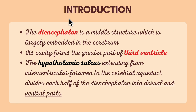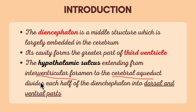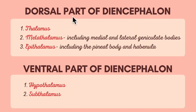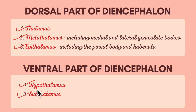Concising the important points under the introduction to the diencephalon: the diencephalon is a middle structure which is largely embedded in the cerebrum. Its cavity forms the greater part of the third ventricle. The hypothalamic sulcus extending from the interventricular foramen to the cerebral aqueduct divides each half of the diencephalon into dorsal and ventral parts. The dorsal part contains the thalamus, metathalamus and epithalamus; the ventral part contains the hypothalamus and the subthalamus.